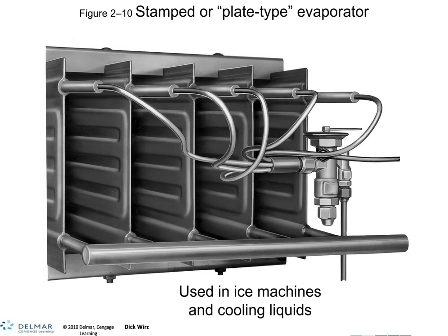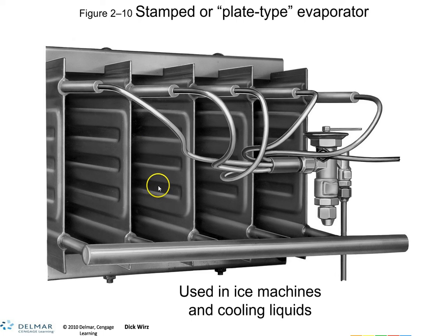Then you have the stamped or plated evaporator. These are used mostly in ice machines — we'll go over ice machines in a later lesson. The refrigerant flows through the stamped plate, cooling the entire plate. In an ice machine, water flows over the top of the plate to freeze the water.